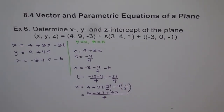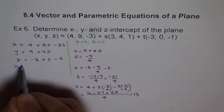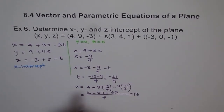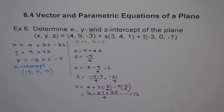So x intercept equals (16 minus 27 plus 63) divided by 4, which equals 52 over 4, giving us x equals 13. Therefore the x intercept is (13, 0, 0).